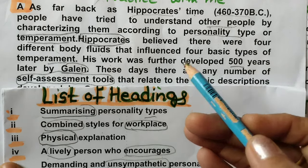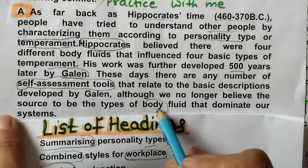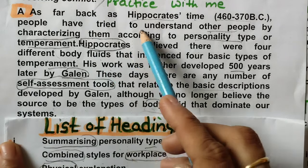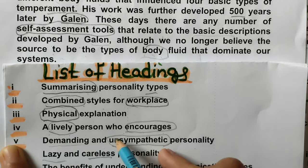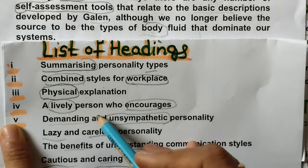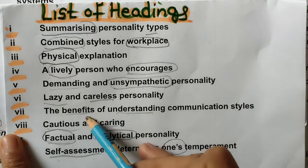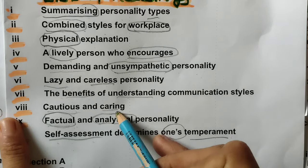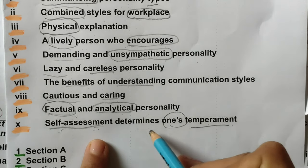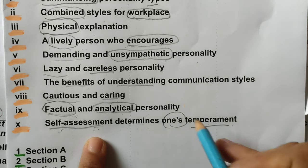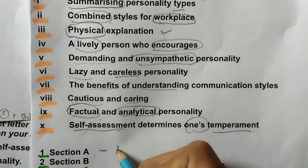They are talking about two persons — Hippocrates and Galen — and people trying to understand each other by characterizing them according to personality type. So, are they talking about 'summarizing'? No. 'Combined style for workplace'? No. 'Physical examination'? I can see 'types of body fluid' as well as 'people have tried to understand other people by characterizing them according to personality type.' A lively person? No. Demanding? No. Lazy? No. Benefits of understanding? No. Cautious? No. Factual? No. 'Self-assessment determines one's temperament'? Self-assessment tools were there, but they are not determining temperament here. We go with 'physical examination' — every paragraph will get a heading.